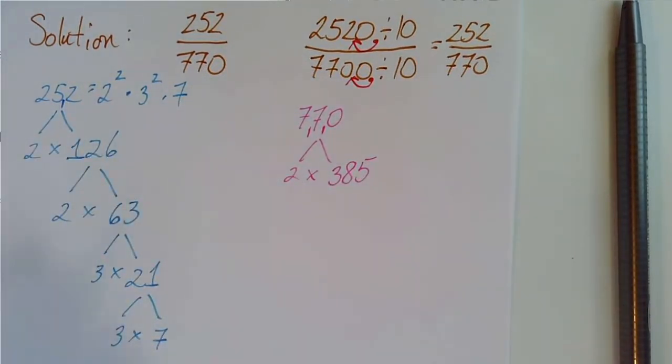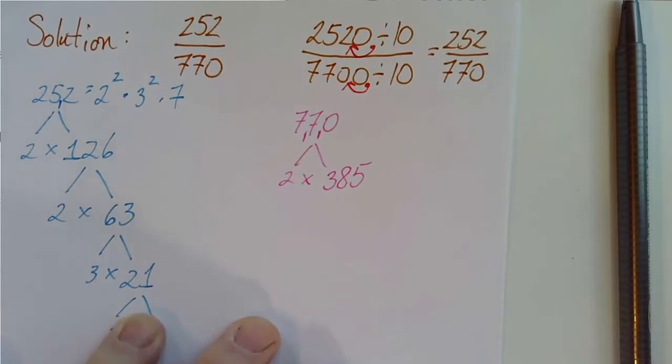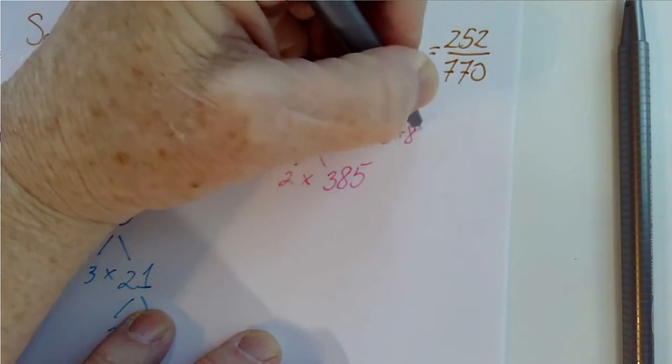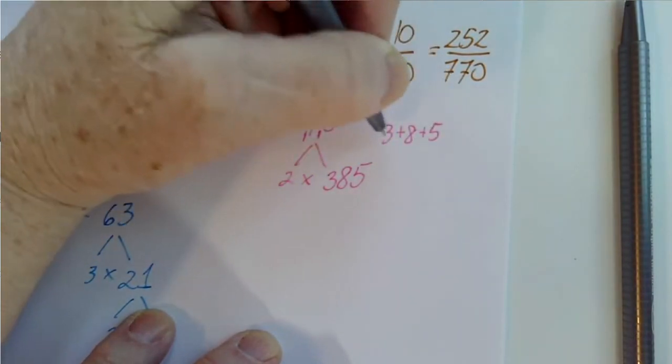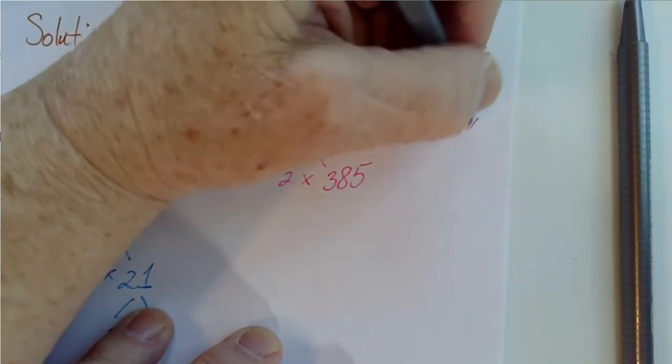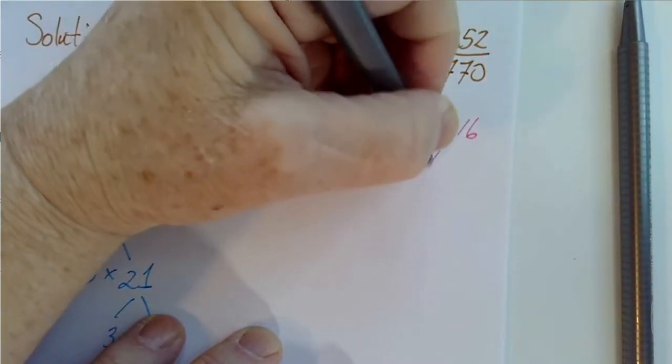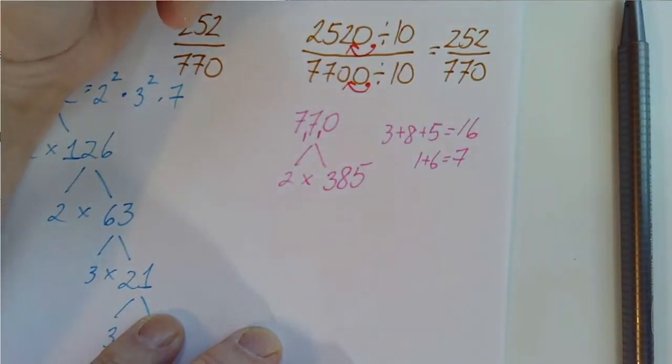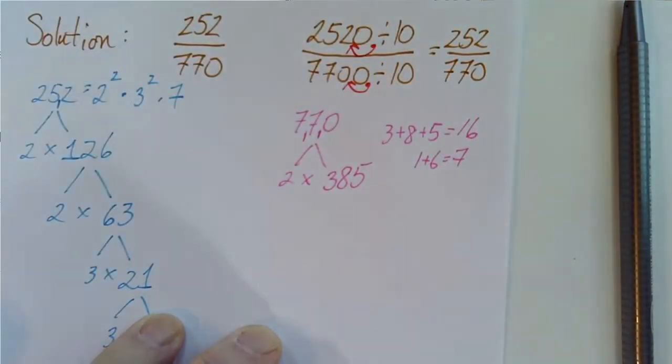But what about 3? So to see whether or not 3 goes into 385, we're going to add the digits. 3 plus 8 plus 5. Let's see. 3 plus 8 is 11. 11 plus 5 is 16. 1 plus 6 is 7. 3 does not go into 7 evenly. So 3 will not go into 385.